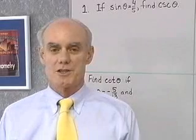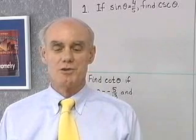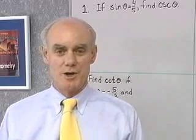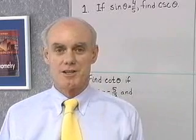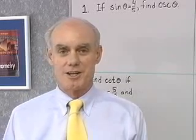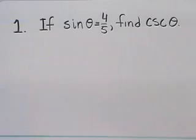What we want to do next is look at some of the ways that we can use our ratio identities, reciprocal identities, and Pythagorean identities. Here's our first problem: if sine theta is 4 fifths, find cosecant theta.